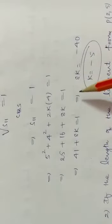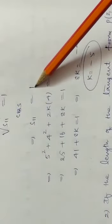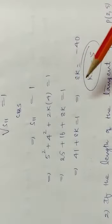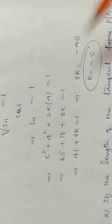Simplification: 8ky equal to minus 40, so ky equal to minus 5. The k value obtained is minus 5.